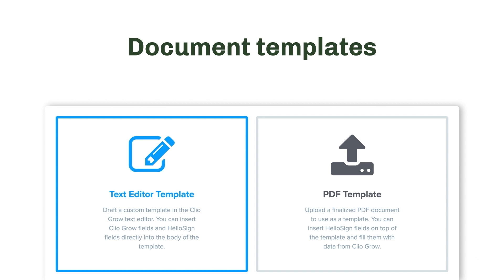The first one we're going to cover is document templates, and we have two different document template types in Cleo Grow. The first one is our text editor template — it's our blank canvas and you can do a lot with it, and it's the one we most often recommend. The second one is our PDF editor, which is better for more rigid use cases.